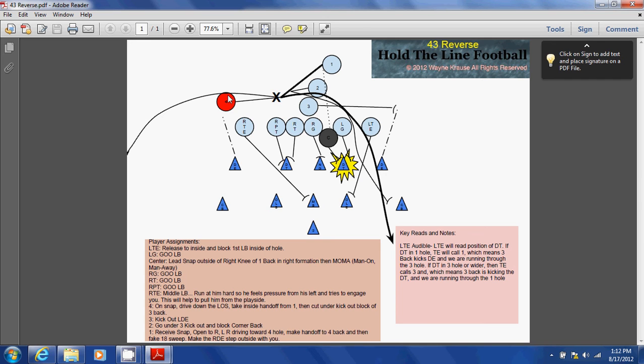But the four back gets it and comes underneath. It's a reverse, but it's not the typical type of reverse because it's a power reverse. We have lead blocking. It is not based upon deception—we do not need deception for this play to work.